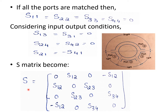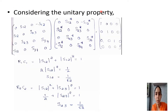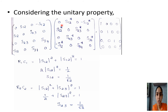The next step is to apply the unitary property of the S-matrix, that is S times S-conjugate equals the identity matrix, to get the elemental values. By considering this unitary property and the reduced S-matrix, we need to solve for the three values S12, S23, and S34.